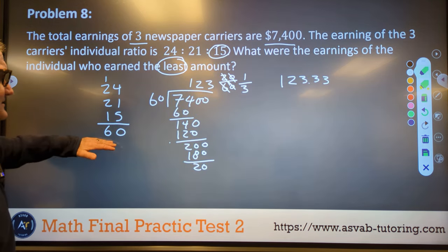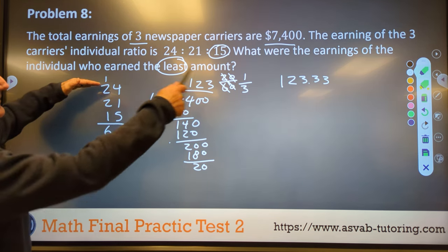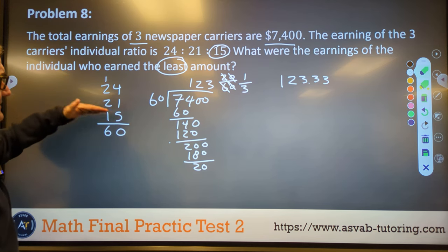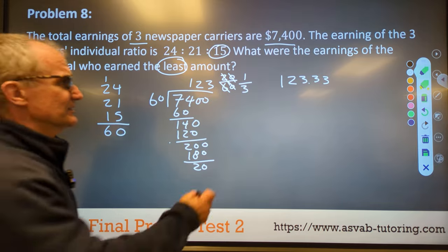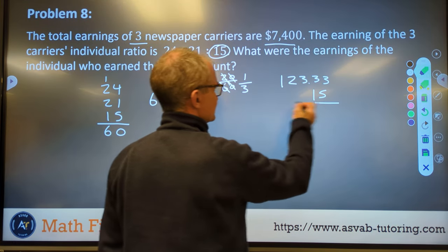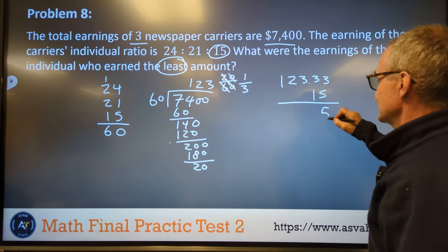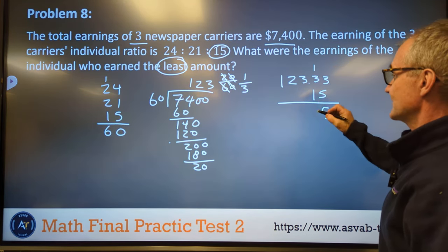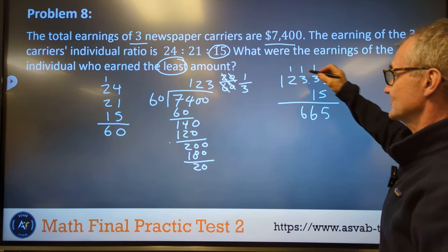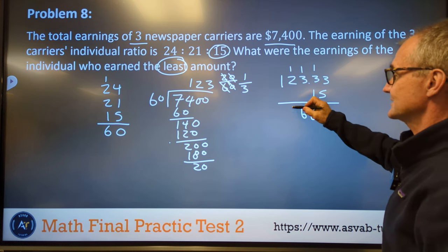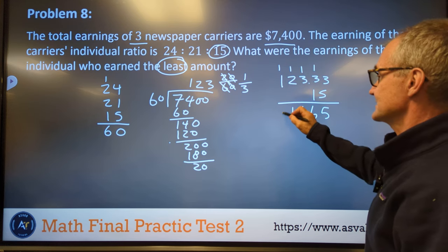So each little share makes $123.33. So this is the sum of all the shares. The person making the most makes 24 of the $123s. The medium person and then the low person, what we're looking for, makes 15 of those. So I've got to take this $123.33 times 15. 15 times 3 is 15. Carry the 1. 15 plus 1 is 16. Carry the 1. 16. Carry the 1. 5 times 2 is 10. Plus 1 is 11. Carry the 1. 5 times 1 is 5. 5 plus 1 is 6.